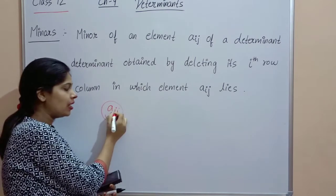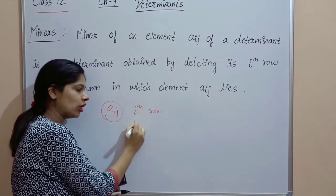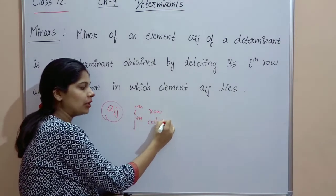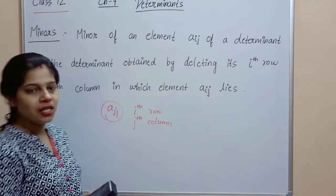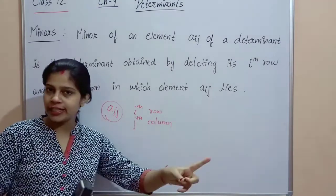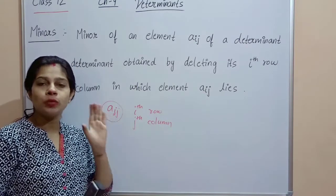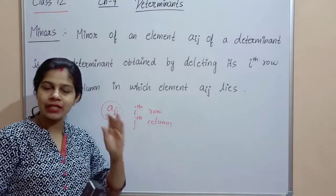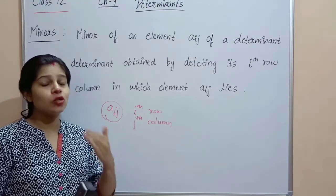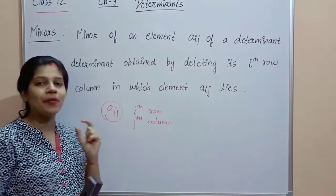Aij means the element in the i-th row and j-th column. We delete the i-th row and j-th column, and the remaining elements form the determinant. That determinant is called the Minor of Aij, and it is denoted Mij.